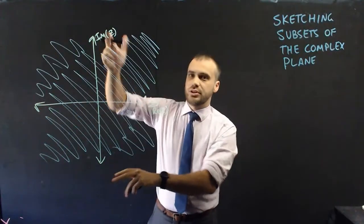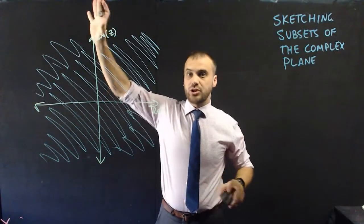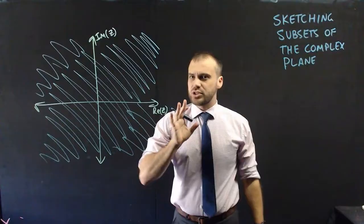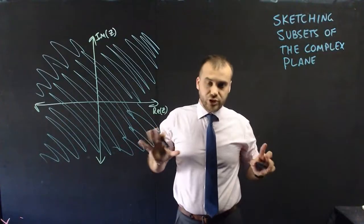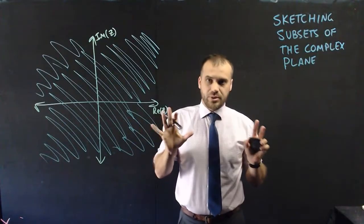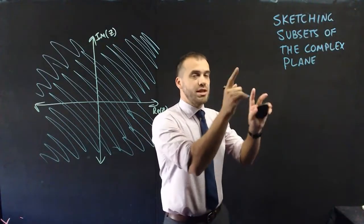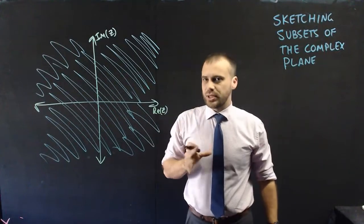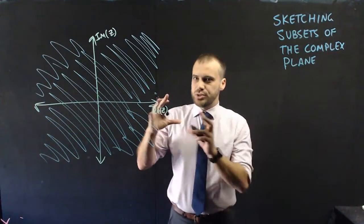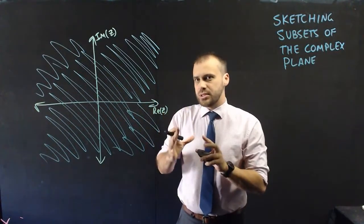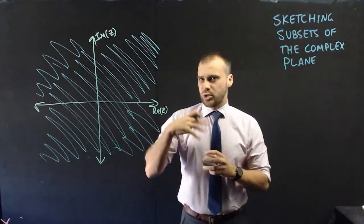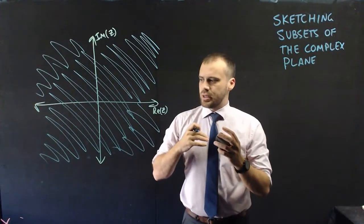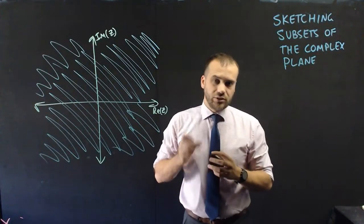The arrows in both directions mean it goes on forever and ever. That's how you'd sketch every single complex number that exists. But in this video, we're going to be sketching subsets of complex numbers — choosing a region or some complex numbers that meet some sort of condition.